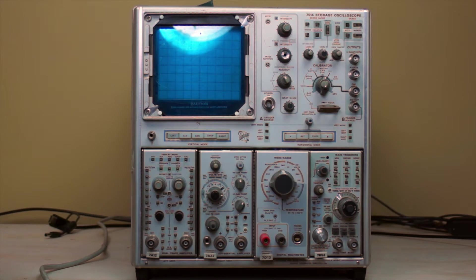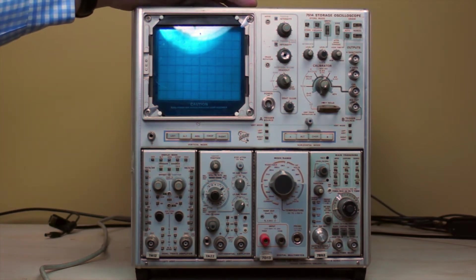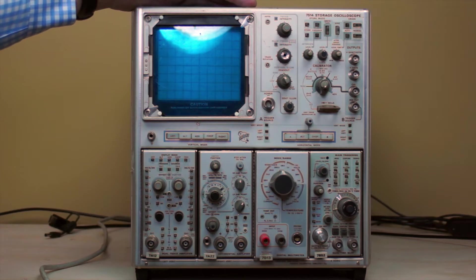Hey guys, today I'm going to review my latest eBay acquisition, which is a rare 7415 storage oscilloscope from Tektronix. This scope was only made in 1969 and 1970.